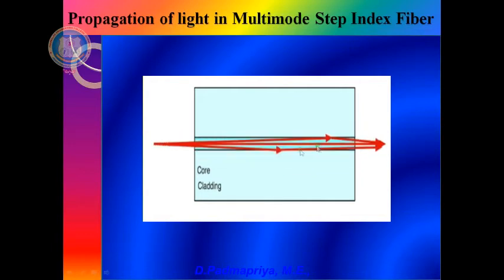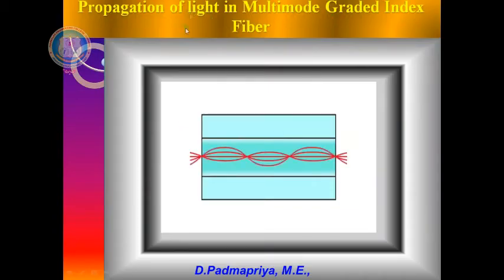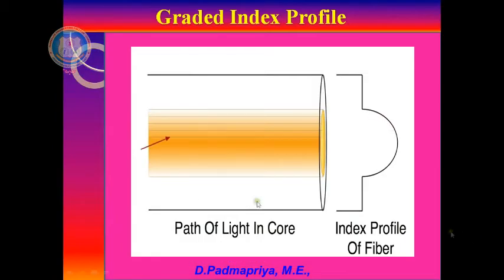This video shows the propagation of light in multimode step index fiber — it allows many rays to pass through with a uniform core refractive index. This shows the propagation of light in multimode graded index fiber — it takes a parabolic path and the refractive index is not uniform throughout the core. This picture shows a comparison of different fiber structures: single mode step index fiber with a very small core allowing only one axial ray; multimode step index fiber with a larger core and uniform refractive index; and multimode graded index fiber with a parabolic profile allowing many rays.